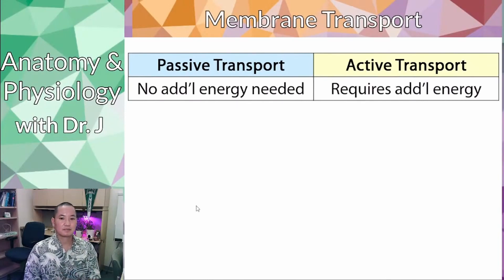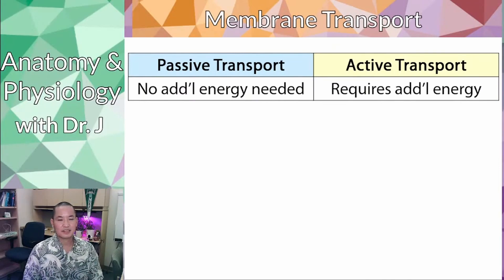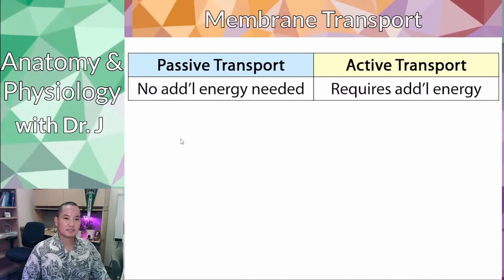We need to talk about transport and how things get across the membrane. There are two broad categories: passive transport and active transport. Passive transport can happen by itself — you can put an artificial cell in a test tube and it occurs spontaneously without adding heat, ATP, or any other chemicals. Whereas active transport means it can't occur by itself; the cell needs additional help from some sort of energy source.